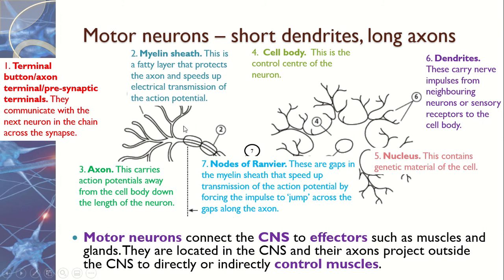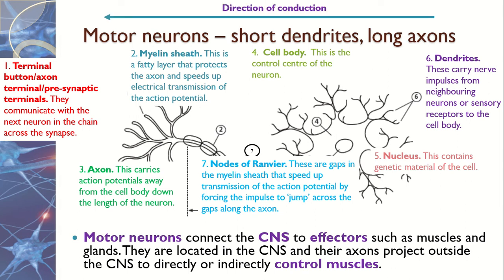Finally, we've got the nodes of Ranvier, which are the gaps between the myelin sheaths. Having these gaps helps to speed up the process of transmission — speeding up the passing of the message along. You need to know all seven features and be able to label them on a diagram and explain what they are. The direction of conduction always goes from the dendrite and nucleus end to the terminal button end.